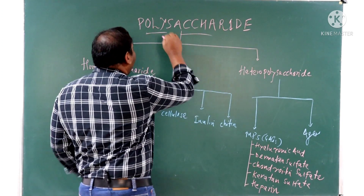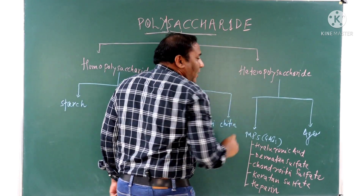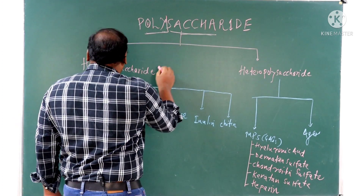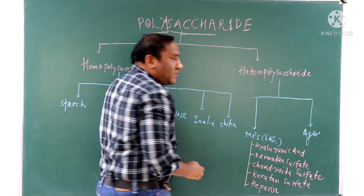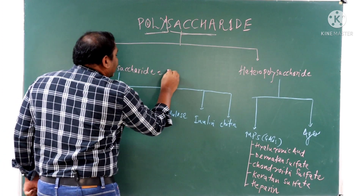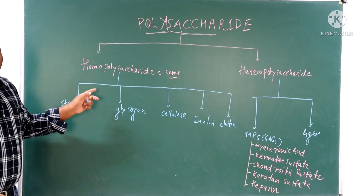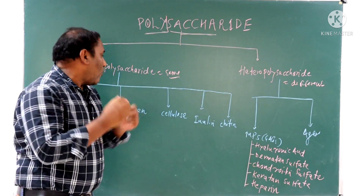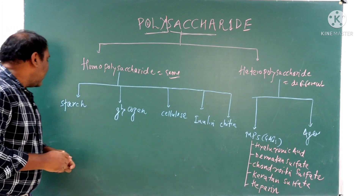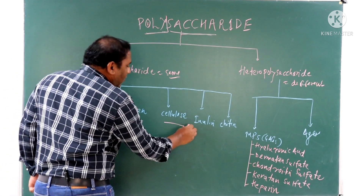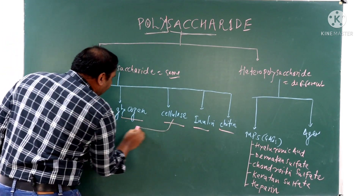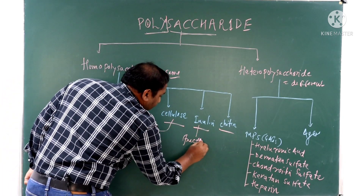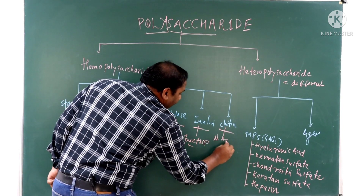Polysaccharides contain more than ten monosaccharides joined by glycosidic bonds. Polysaccharides are subdivided into two groups based on composition. If the same types of monosaccharides are joined, they are called homopolysaccharides. If different types of monosaccharides are joined, they are called heteropolysaccharides. Examples of homopolysaccharides include starch, glycogen, cellulose, inulin, and chitin. Starch, glycogen, and cellulose are homopolymers of glucose. Inulin is a homopolymer of fructose, and chitin is a homopolymer of N-acetylglucosamine.